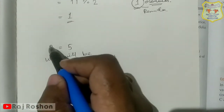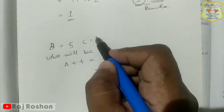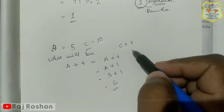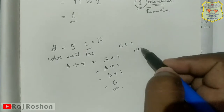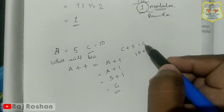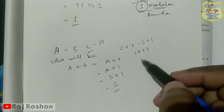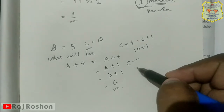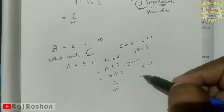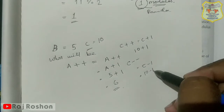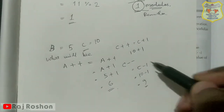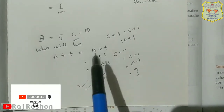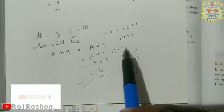It may be any variable — b, c, or any number. So if I write c plus plus, where c is 10, then 10 plus 1 equals 11 — that is c plus 1. The same thing goes with minus: if I write c minus minus, then c minus 1, where c is 10, gives 9. This is how increment and decrement operators are used.